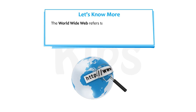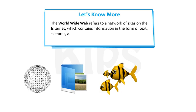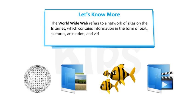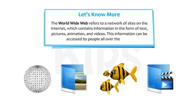The World Wide Web refers to a network of sites on the Internet which contains information in the form of text, pictures, animation and videos. This information can be accessed by people all over the world.